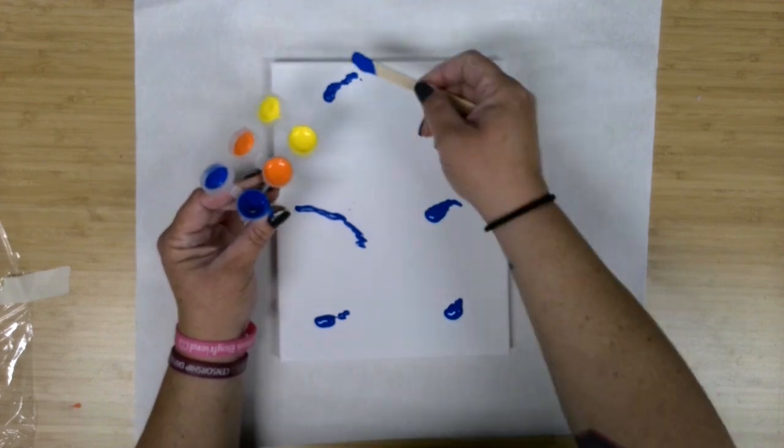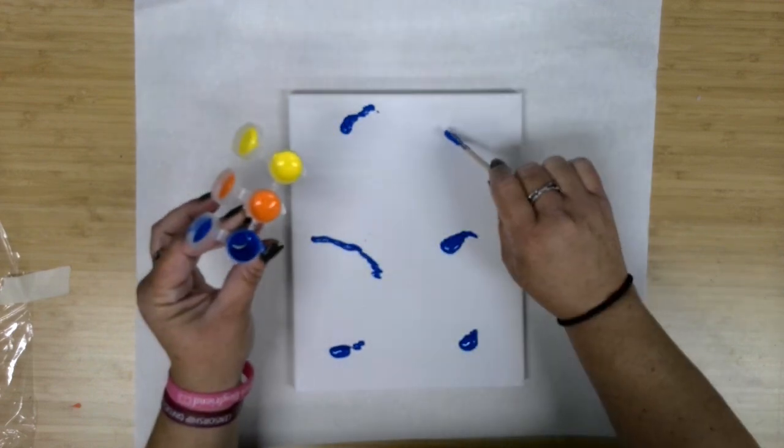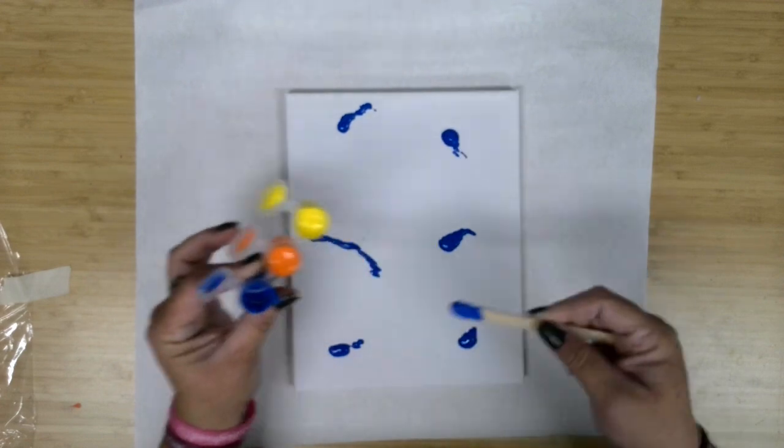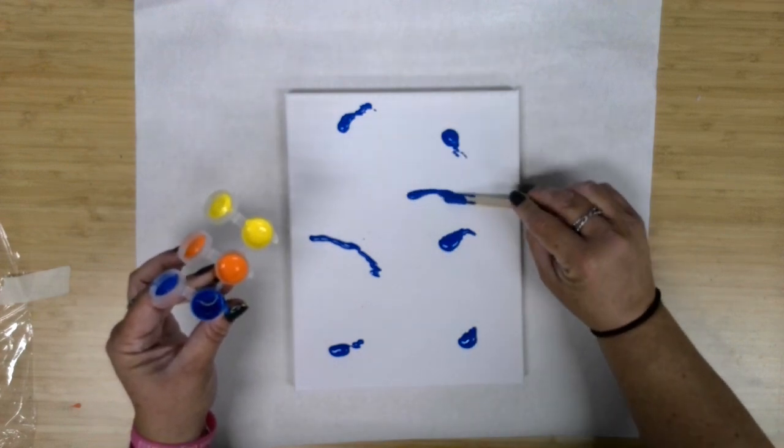I'm not going all the way to the edge, although I'm going fairly close, because with the cling wrap I will be able to push the paint towards the edge. Let's go another nice blue line right here.